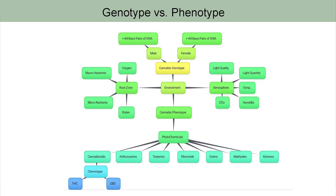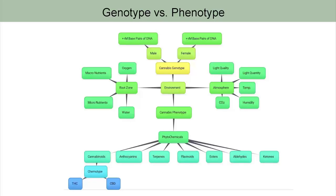Within that phenotype you'll find different phytochemicals: cannabinoids, anthocyanins, terpenes, flavonoids, esters, aldehydes, and ketones. The two chemotypes most people know are THC and CBD.